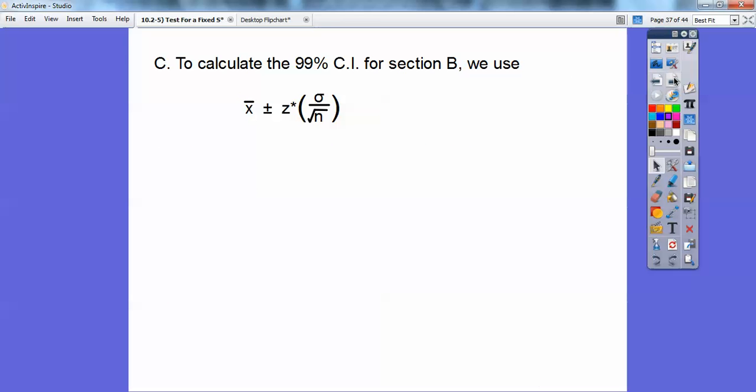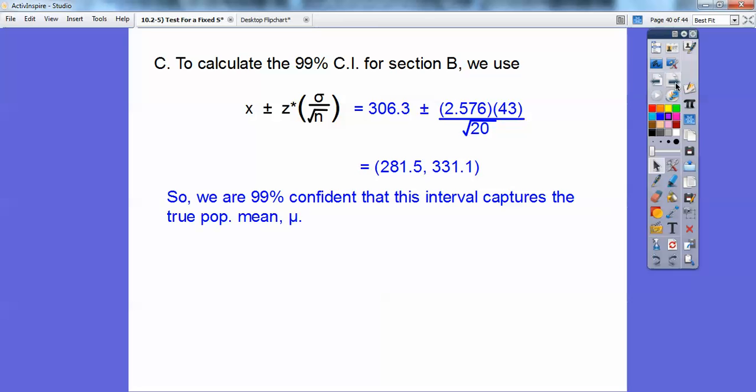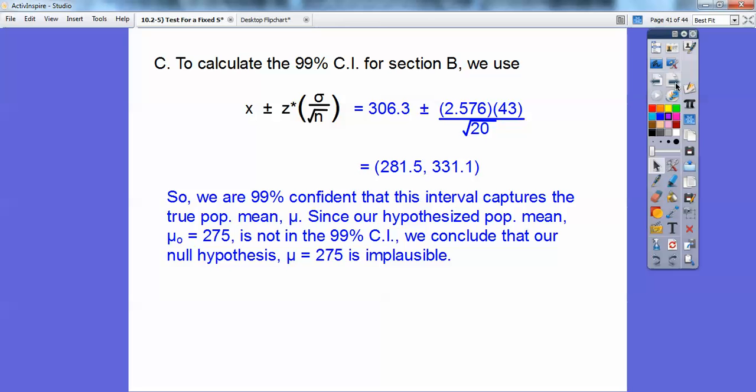All right, so now we're going to calculate the 99% confidence interval of that same screen tension. Okay, so we're going to plug those numbers in, and we get, there's my 99% confidence interval. Now, do you see 275 is not even in the 99% confidence interval? Okay, so we can reject it from right there. So our 99% confidence interval captures the true population mean. All right, so since our hypothesized population mean μ = 275 is not in that 99% confidence interval, we can conclude that our null hypothesis is implausible. It's not, it can't be 275. Thus,